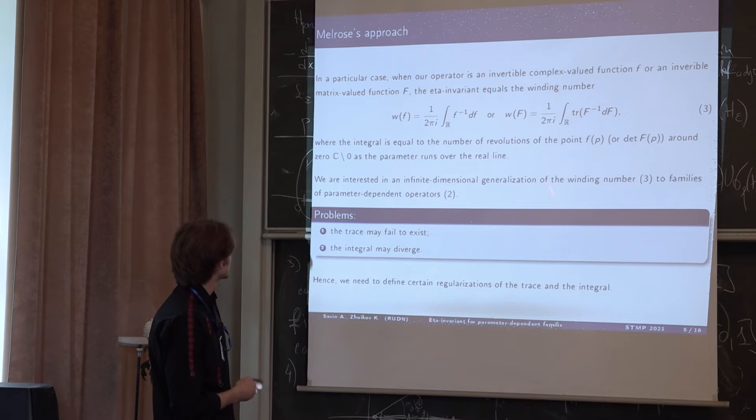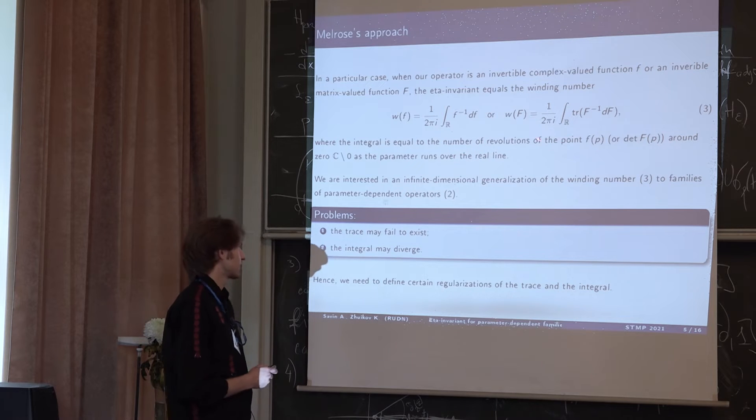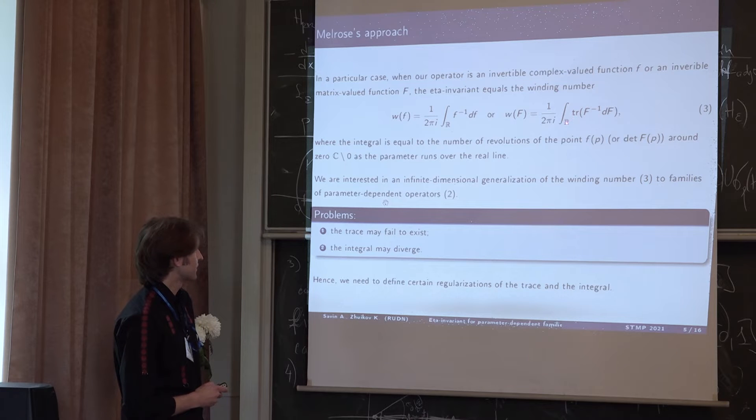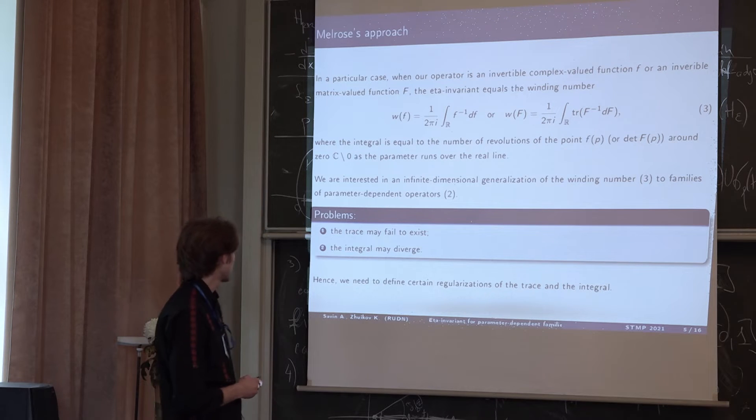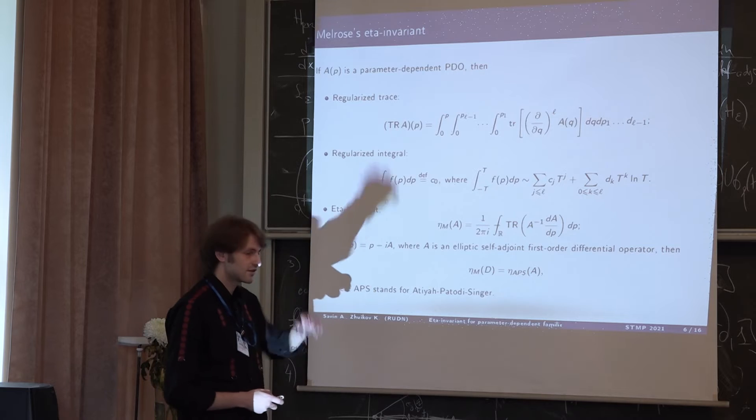This is the winding number. Let's imagine that we have a complex non-vanishing complex valued function, a function or matrix valued function F. Formula three gives us winding number formula. This is for a complex valued function and this is for matrix valued function. We assume that there exists limits of function F. In this case, the winding number gives the number of revolutions of the point F of P around zero or determinant of F of P in this case. We are interested in infinite dimensional generalization of formula three. As we can see, there is a trace and there is an integral. We have two problems because the trace may fail to exist. We need the operator to be of trace class and the integral may diverge. We need to define certain regularizations of the trace and integral.